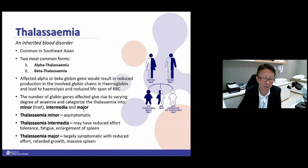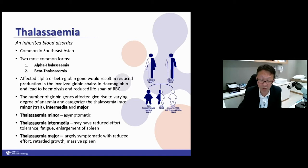In thalassemia minor, patients are usually asymptomatic. Intermediate is in between. Thalassemia major is problematic — patients need transfusions since the age of six months, every two to three weeks. Most of these patients develop iron overload leading to retarded growth, diabetes, and a very large spleen causing abdominal discomfort.